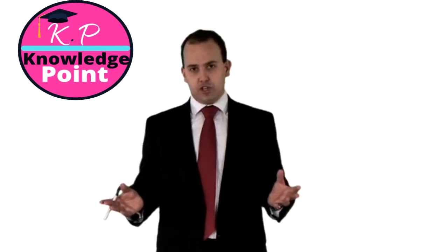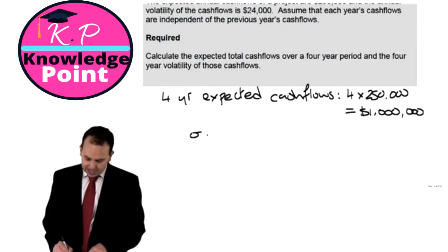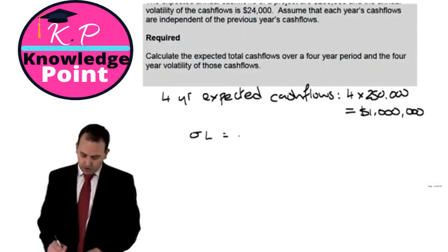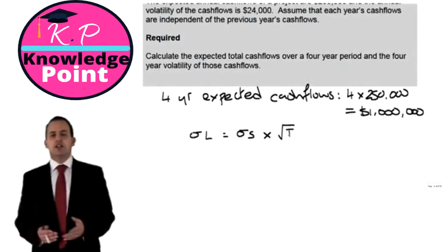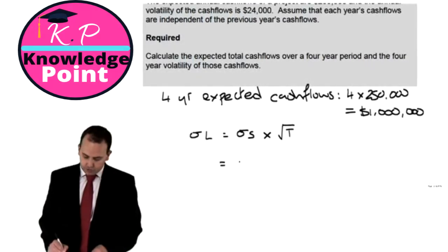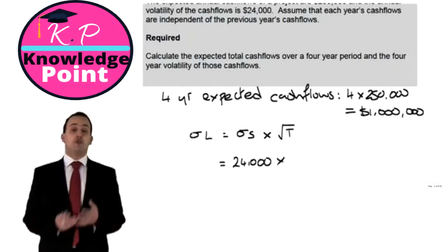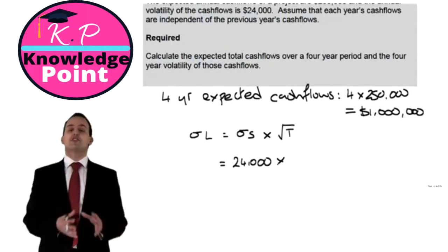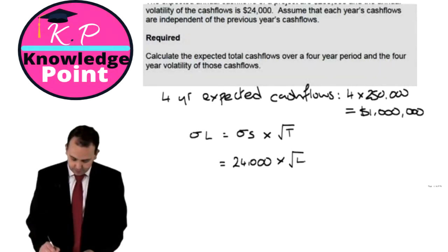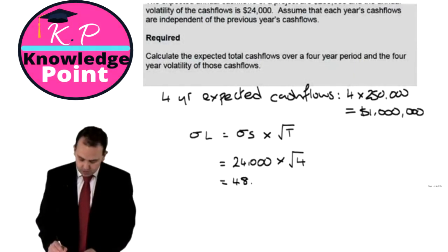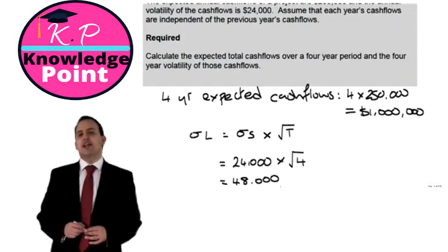What we need to do is work out how volatile this is going to be over the whole four-year period. Using the formula, we look at the standard deviation over the short period multiplied by the square root of the time difference between the long and short periods. The standard deviation over the short period is $24,000. The short period is one year and the longer period is four years, so t = 4. Therefore: $24,000 multiplied by the square root of 4, which is 2, giving us a four-year standard deviation of $48,000.